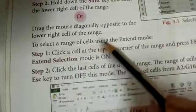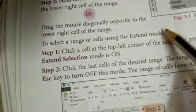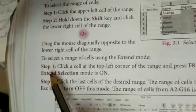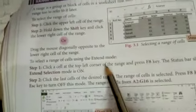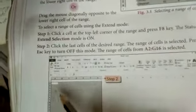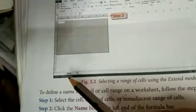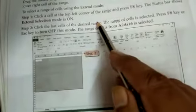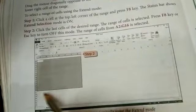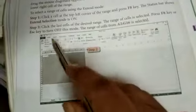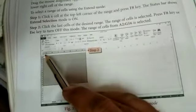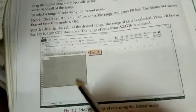You can do the same thing to select a range of cells using the Extend mode. Step 1, click a cell at the top left corner of the range. Press F8 key. The status bar shows Extend Selection mode is on. Click the last cell of the desired range. The range of cells is selected. Press F8 key or Escape key to turn off this mode. So the range from A2 till A16 is selected.